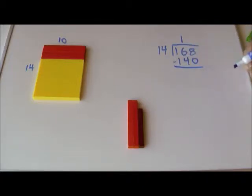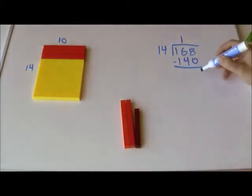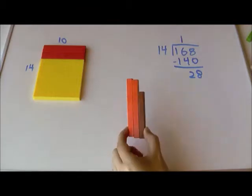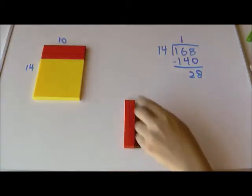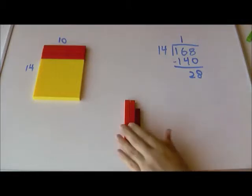And what do I have left? I can look down here and see or I can subtract the traditional way and I have 28 left. So now I need to take 28 and make that into a rectangle with 14 on one side.